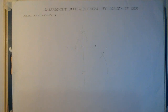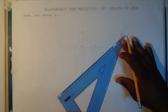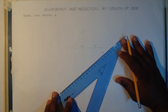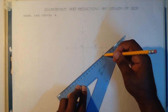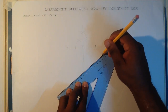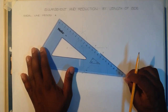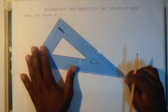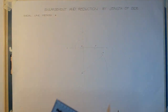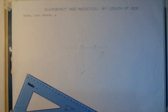Still using construction lines, you join the points for your required shape. The darkening of the required shape comes at the end of our construction. We move now to the step required for the use of radial line method A to reduce or enlarge the shape.